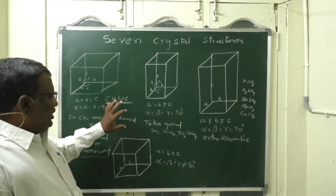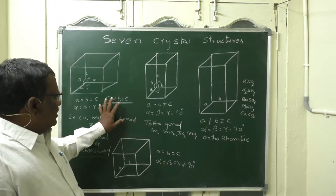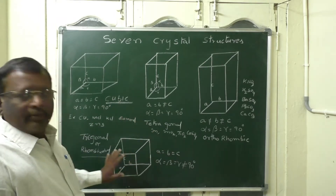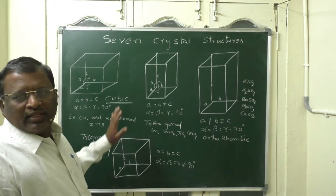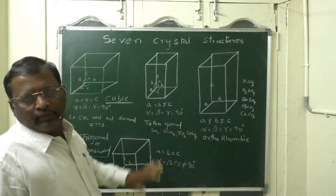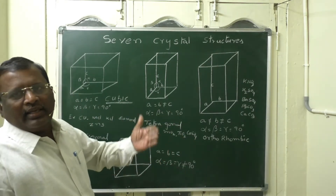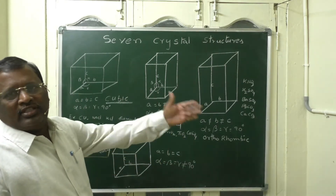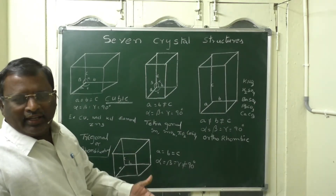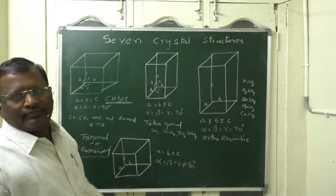Simply to remember, just note down C, T, O, T — and the other three are H, M, T: hexagonal, monoclinic, and triclinic.